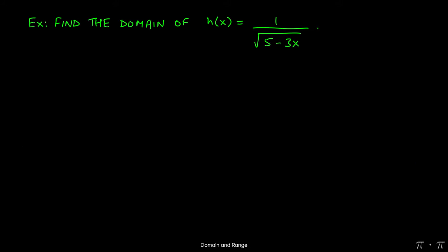Let's say we're asked to find the domain of this strange-looking function: 1 over the square root of 5 minus 3x. Now there's a couple of things at play here, so let's tease this apart piece by piece.